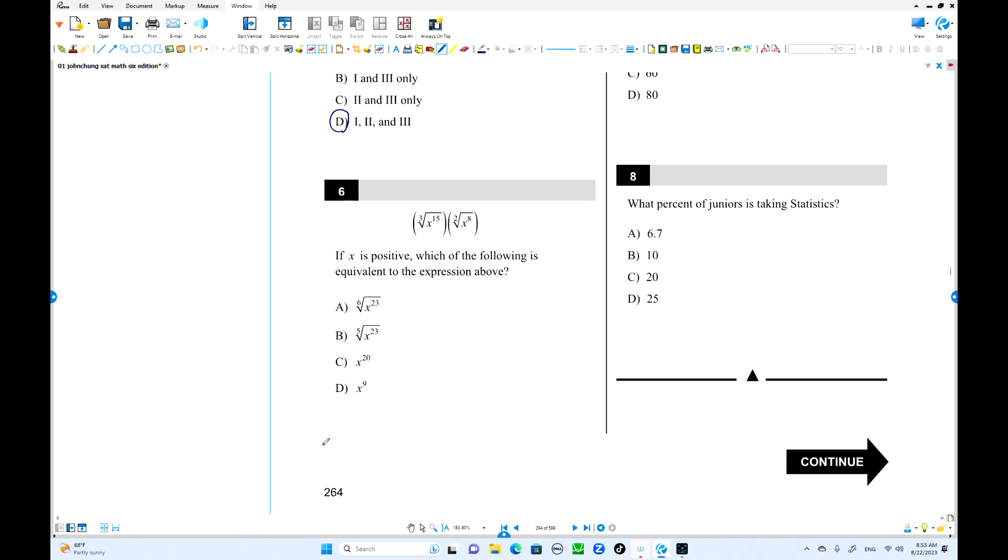Number 6. x is positive. Which of the following equivalent? You know this is 15 over 3. That is x to the 5. The next is x to the what? 8 over 2 is 4. So x to the what? 5 plus 4 is 9. That is simplest form.